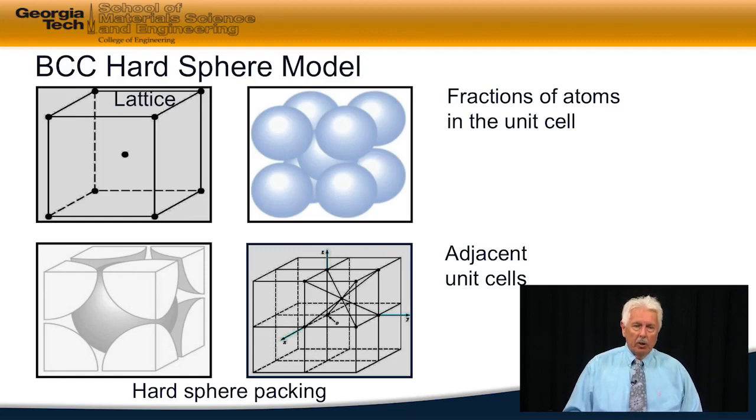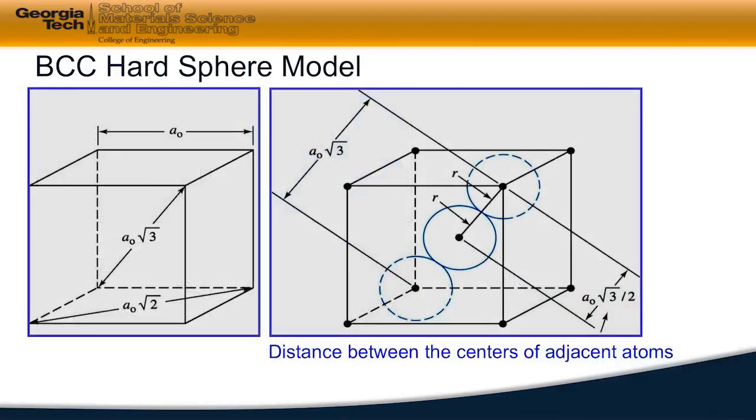If we look at the unit, we will have in each one of those corners one-eighth of a sphere, and in the center we have a complete sphere, giving us a total of two spheres in that unit.